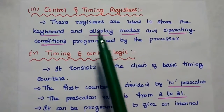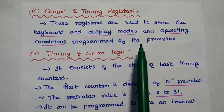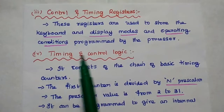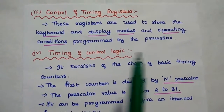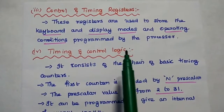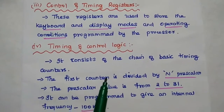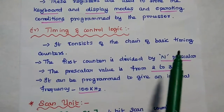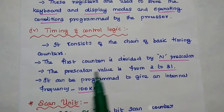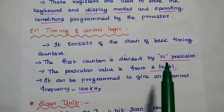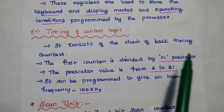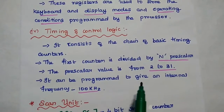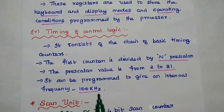The control and timing registers are mainly used to store the keyboard and display modes and operating conditions programmed by the processor — it stores all keyboard and display command related words. The timing and control logic consists of a chain of basic timing counters. The first counter is a divide-by-N prescaler, which can be set from 2 to 31 and programmed to give an internal frequency of 100 kHz.